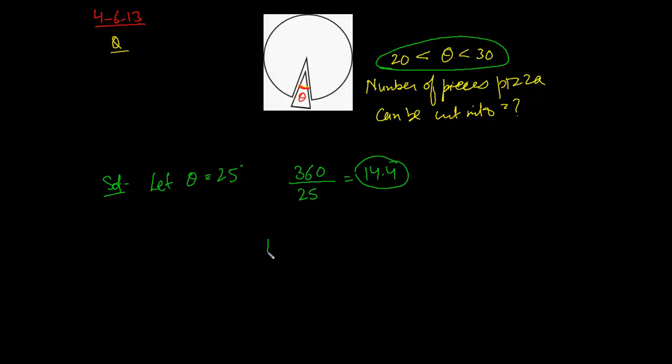So the number of pieces that we would be able to make should be more than 360 divided by 30, because with a 30 degree angle we would be able to make less pieces, and less than 360 divided by 20, which is the opposite.